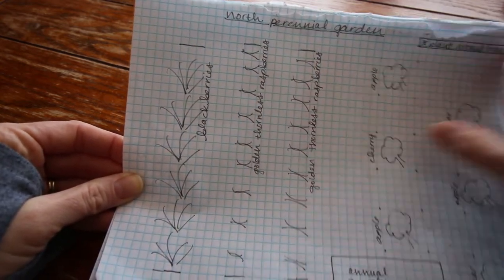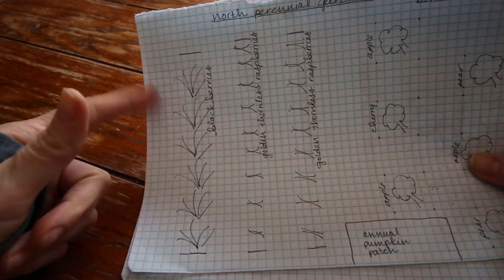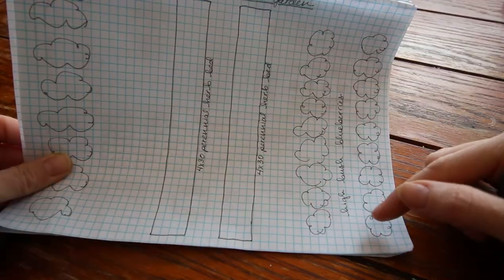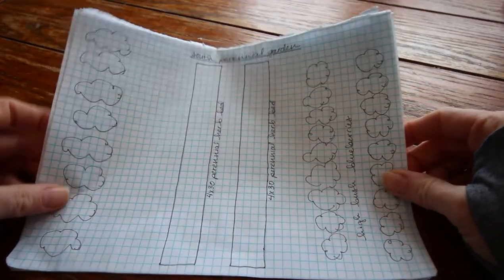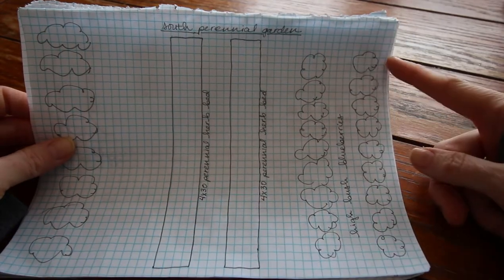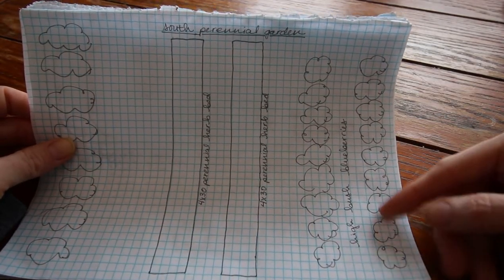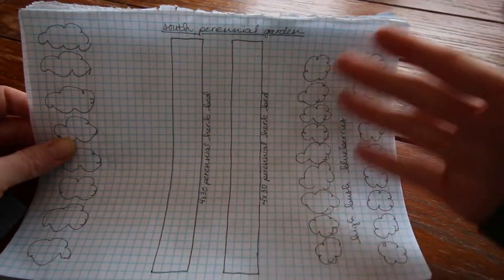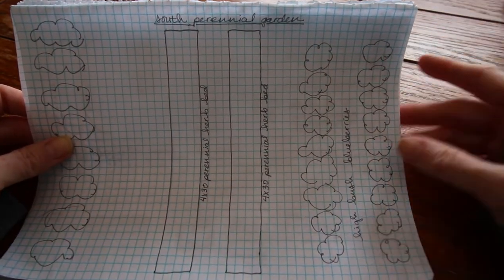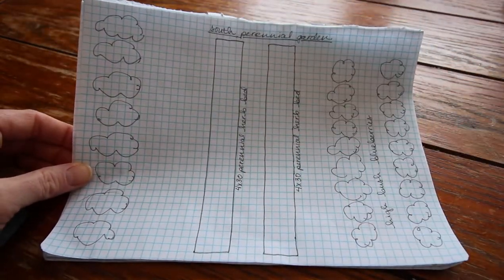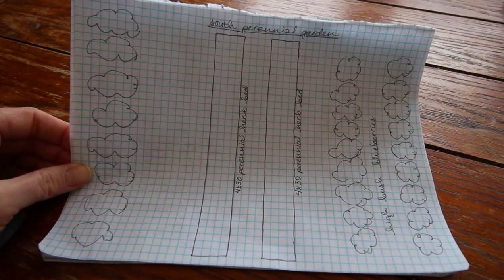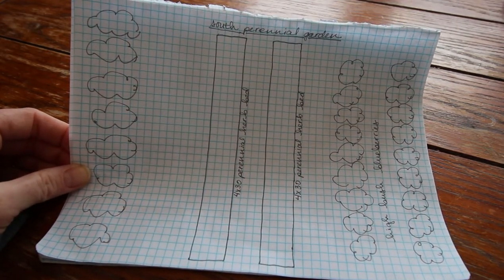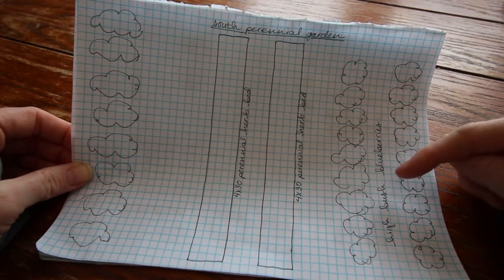This year I'm gonna put some blackberries in next to that. This is the south perennial garden, we've got some high bush blueberries. I've got six plants started already, I'm gonna add to them and add another row if I can find them.